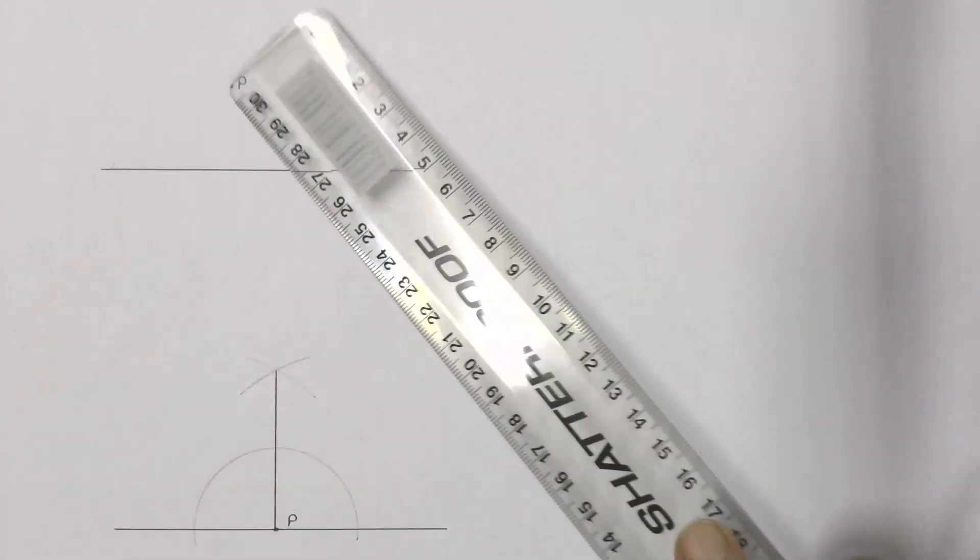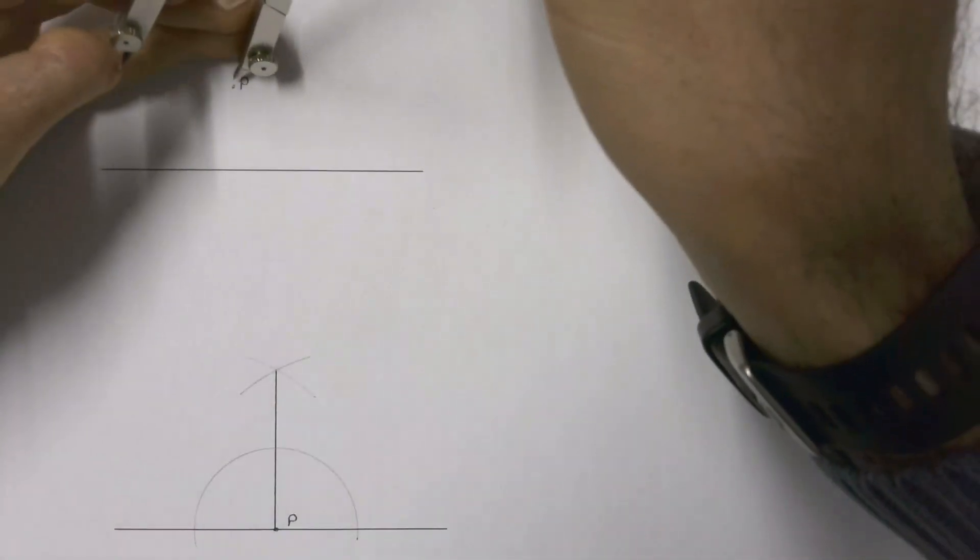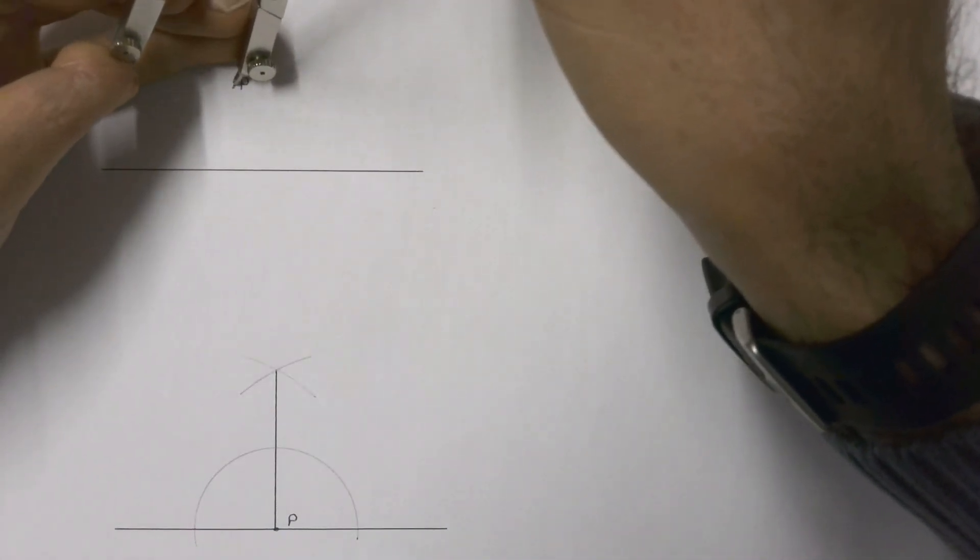At the top over here, if we need to drop a line from point P down onto that line and it has to be perpendicular, then we take our compass and place our compass on point P.